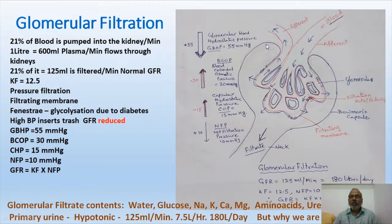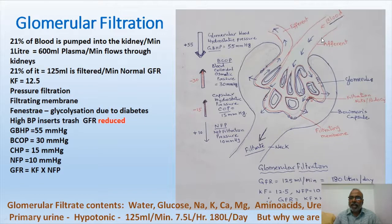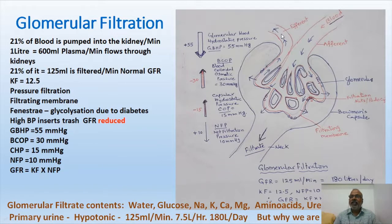Observing the diagram: this is the Bowman's capsule, and inside it there is a capillary network called the glomerulus — a ball of capillaries. The glomerulus receives blood from the afferent arteriole, and blood exits through the efferent arteriole. The afferent arteriole diameter is large — more blood comes in — while the efferent exit is less because some materials have been filtered out. Each capillary is covered by a layer called endothelium, which is a squamous epithelium.